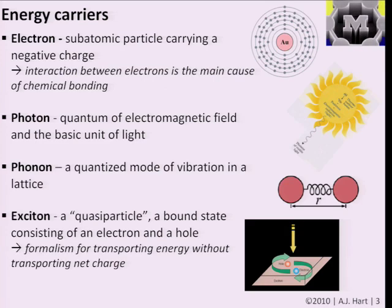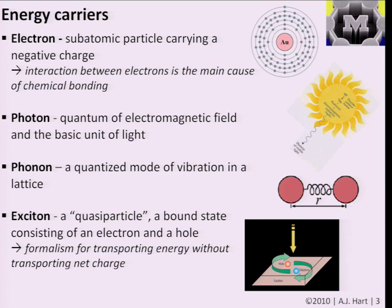Last time we started on our journey of transport through nanostructures, and we first introduced the existence of the four basic energy carriers. An electron is a subatomic particle carrying a negative charge, a photon is a quantum of field and a basic unit of light. We talked about particle-wave duality, where experiments with waves and electrons let us understand both the wave properties and the particle properties of matter.